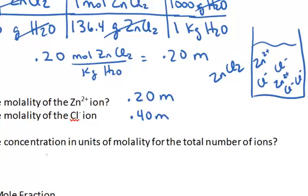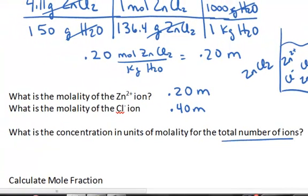And then if I ask the question, what's the concentration units of molality for the total number of ions, then for every one formula unit, I'm going to end up with one, two, three ions in solution. So if I was reporting out the concentration of the individual ions, the sum of them, then that concentration would be 0.6 molal.